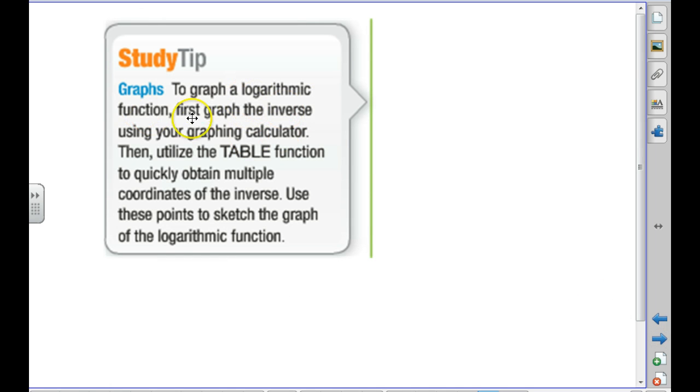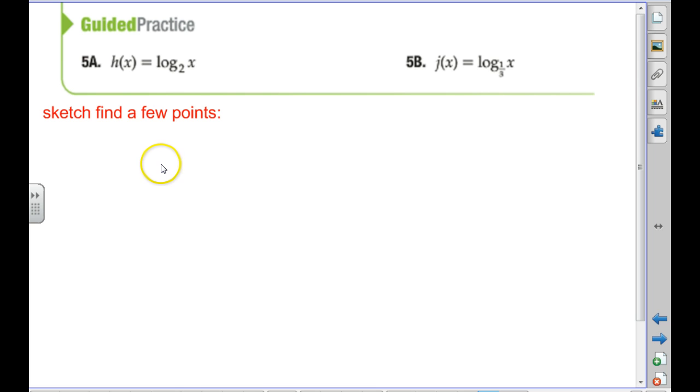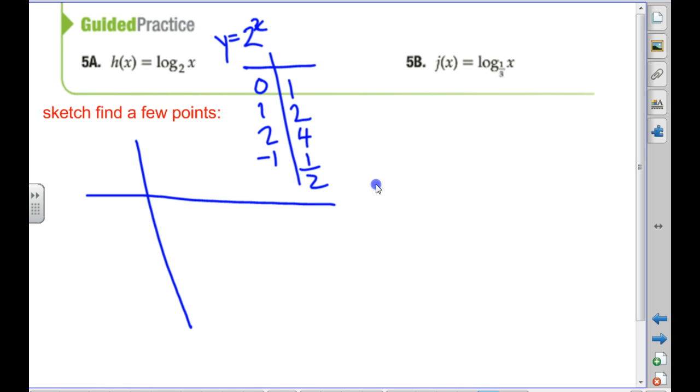So, one more time. When you want to graph a log function, graph the inverse and then use the table to switch the ordered pairs around. So, how would we graph this? Or just do a few ordered pairs on our own. So, if we were doing 2 to the x, what would some ordered pairs be? Y equals 2 to the x. 2 to the 0 would be 1. 2 to the 1st would be 2. 2 to the 2nd would be 4. 2 to the negative 1 would be 1/2. That's probably enough to give us the right idea. Am I plotting those points? I was going to. It's going to be a growth function if I plot those. If I want to do the log, I have to do the inverse. So, I'm going to plot 1, 0; 2, 1; 4, 2; and 1/2, negative 1.